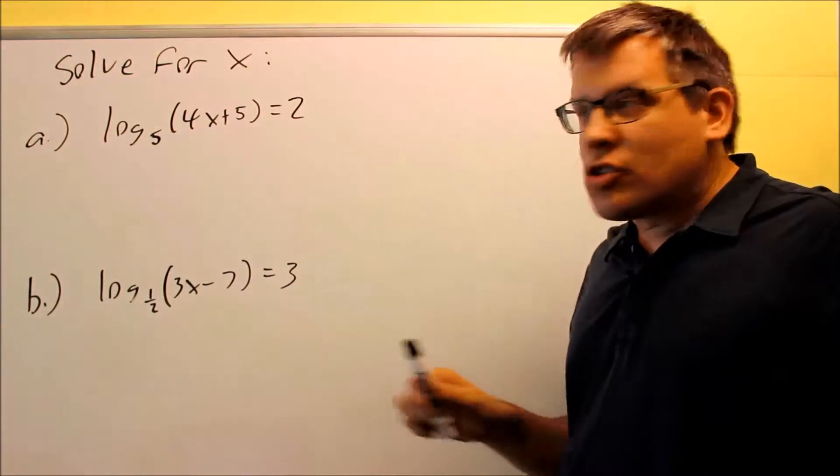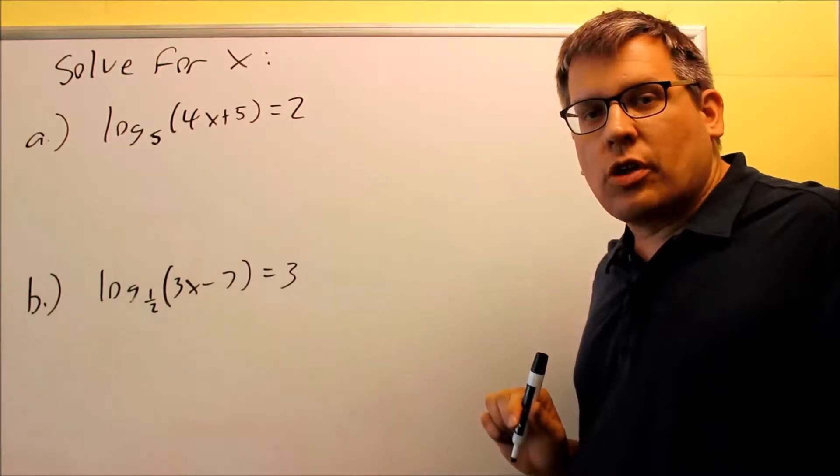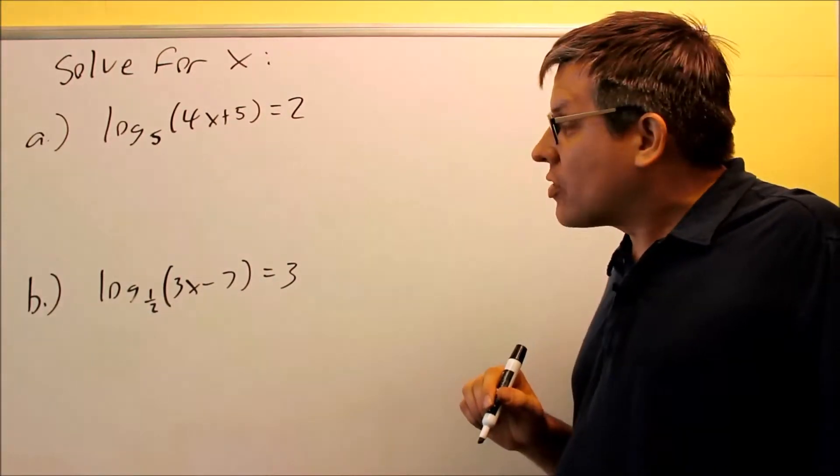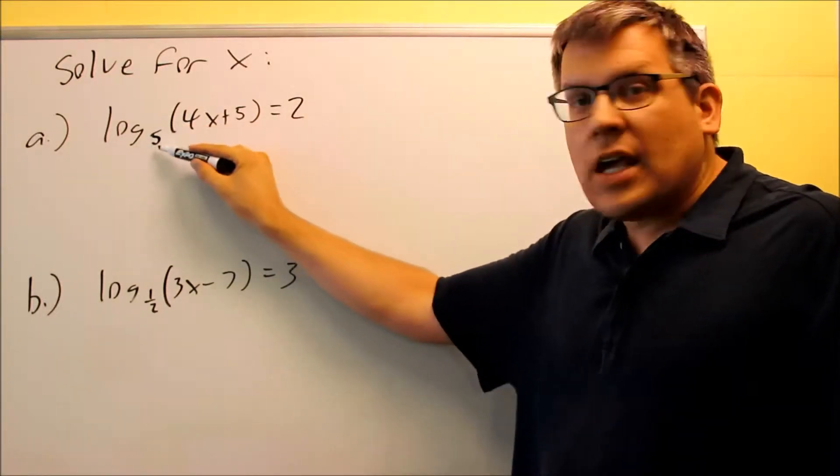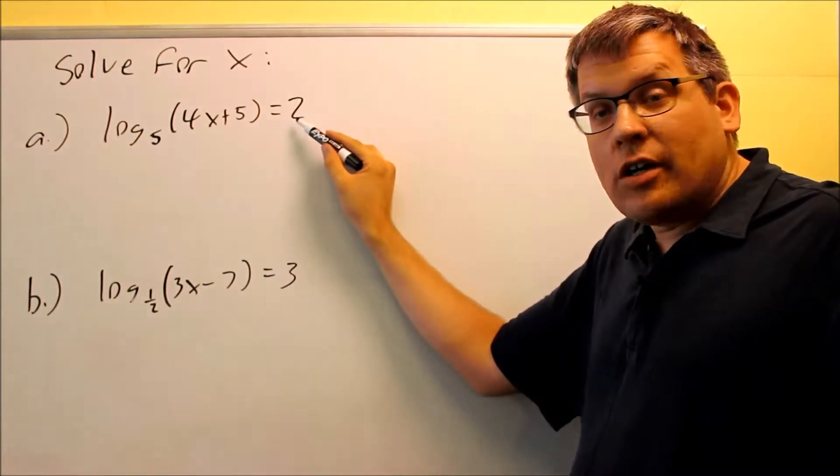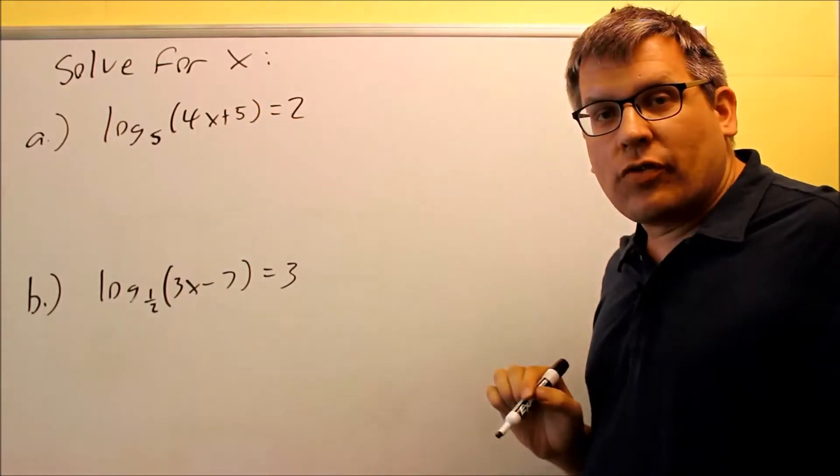So for this one, we want to change it from log form to exponential. We talked about this before in a previous section. What you do is you take this number here, the base, you're going to raise it to the number after the equal sign, and then it's going to equal whatever you have left over.